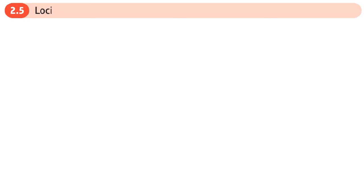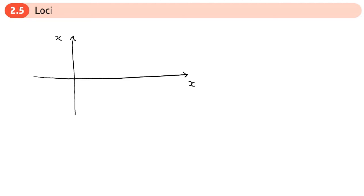This is the fifth and final section of the conic sections chapter, and here we're going to be looking at loci. A definition of the parabola is it's the locus of points equidistant from the focus and the directrix. The focus is at the point (a, 0) and the directrix has equation x minus a equals zero.